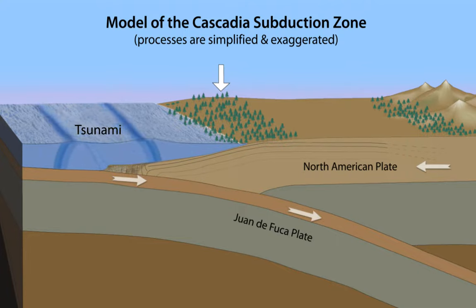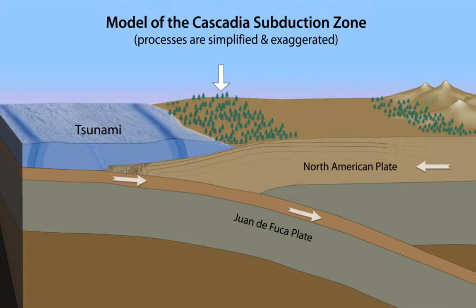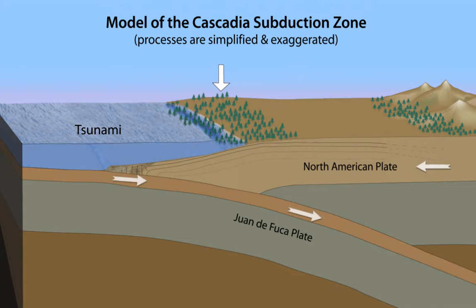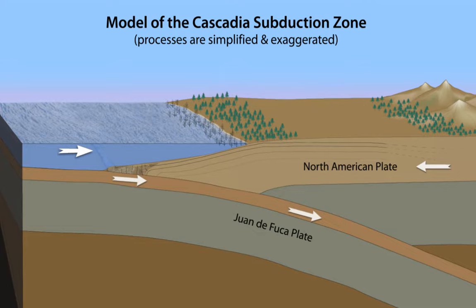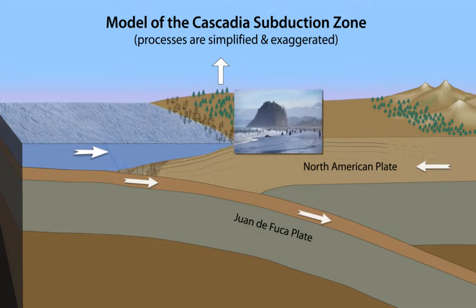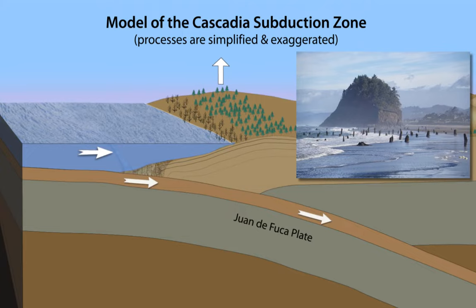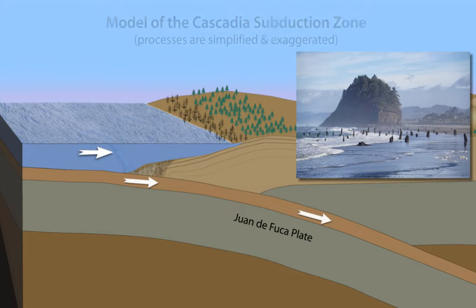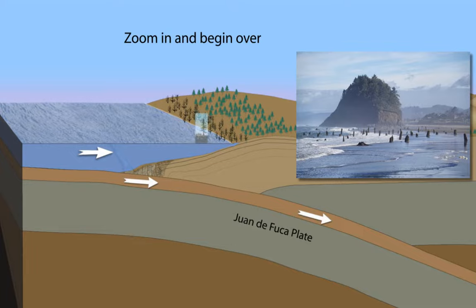The offshore leading edge of the continental plate lifts the ocean, sending a tsunami out to the open ocean and on to shore, carrying sand and debris inland. The drowned forest dies in the salty marsh, while the process begins anew, eventually raising the dead tree trunks above sea level, creating what is known as a ghost forest.